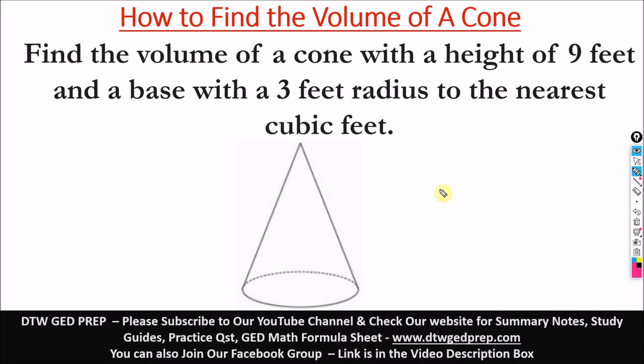So here we have this question. It says, find the volume of a cone with a height of 9 feet and a base with a 3 feet radius to the nearest cubic feet. From our GED formula sheet, the formula for the volume of a cone is 1 over 3 pi r squared h.